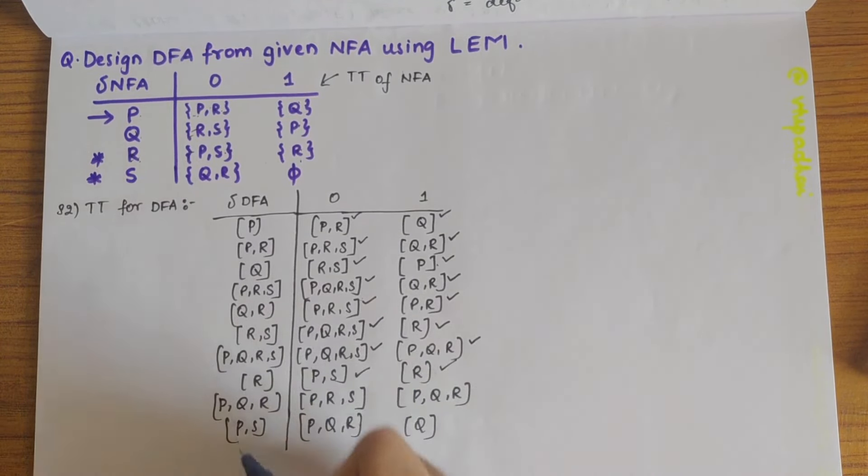Is R defined? Yes, R is defined. Then we have PRS. PRS is defined. Yes, PRS is defined. PQR is defined. Yes, PQR is defined. And Q is also defined.